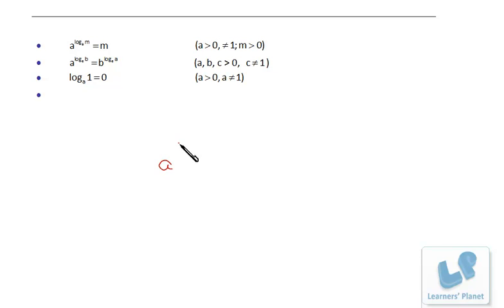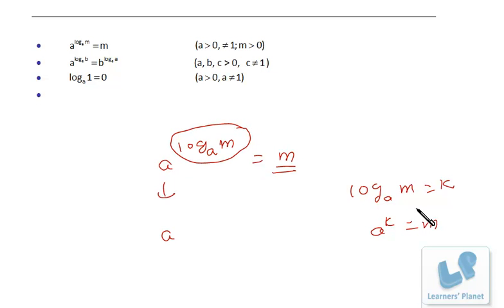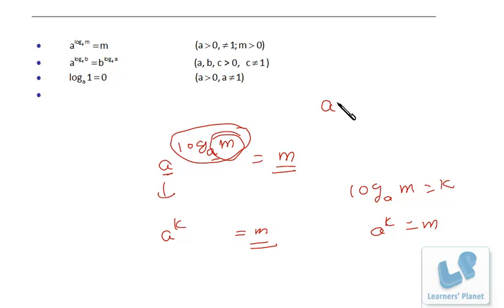Now the next property: a raised to log m to the base a is actually m. How do we establish this? If I assume log_a(m) = k, that means a raised to k equals m. So a raised to k is m, which establishes the property. That means a raised to log_a(m) will be m only — if the base of the exponent and the base of the logarithm are the same, your answer will be the index value.